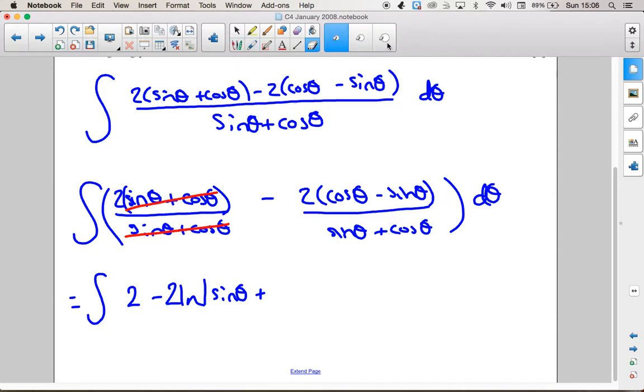I've written this slightly wrong. I've gone ahead and integrated this already. So I'm going to get rid of that integral sign. I'm going to integrate this beginning bit here, which will be 2 theta. And now this will be right.